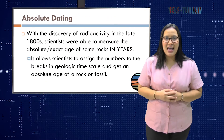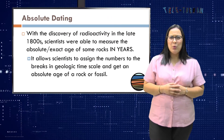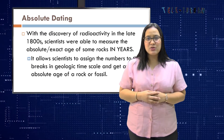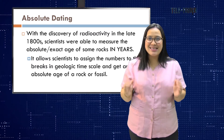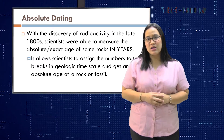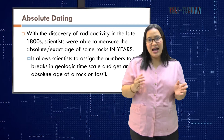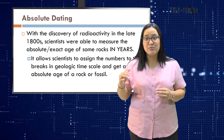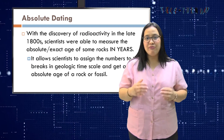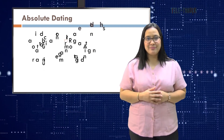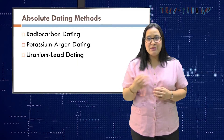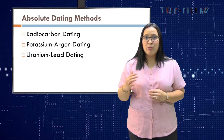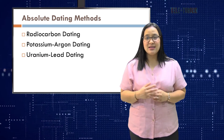Then we have absolute dating. With the discovery of radioactivity in the late 1800s, scientists were able to measure the absolute or exact age of rocks in years. This allows scientists to assign numbers to the breaks in the geologic time scale and get an absolute age of a rock or fossil. In absolute dating, there are three methods used: radiocarbon dating, potassium-argon dating, and uranium-lead dating.